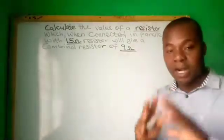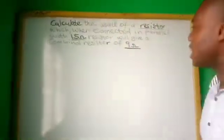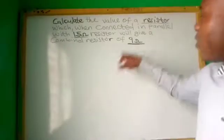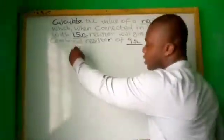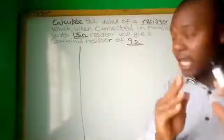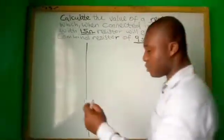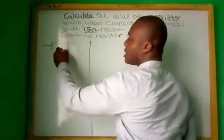This is a question in parallel circuit form. They are asking that there is a resistor connected to 15 ohms in parallel that will give us 9 ohms. What you do is you can decide to plot it in diagram form.